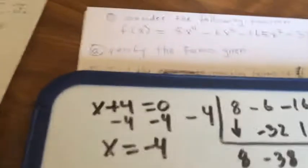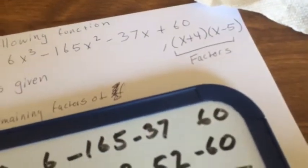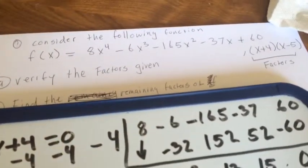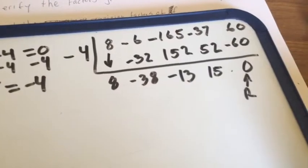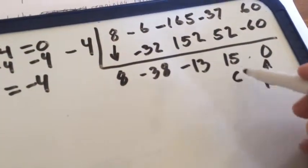The next thing you would do is take the x minus 5, and you could use the original function, but I've already simplified the function down to this.